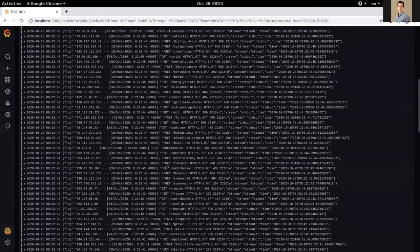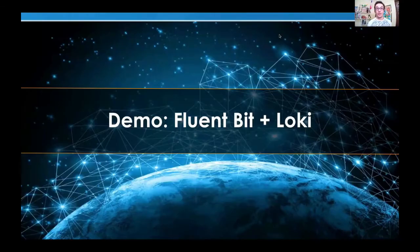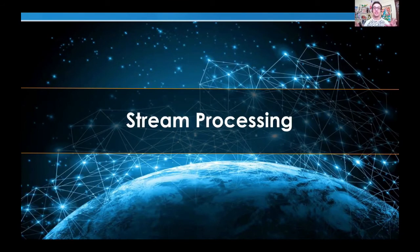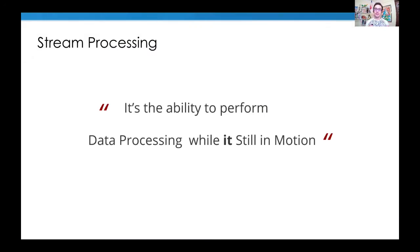Now we'll talk about stream processing and other capabilities. Stream processing is a term you may have heard in contexts like Apache Flink or Kafka. As a concept, it's the ability to process data while it's still in motion. In general use cases, you store data first and then do analysis. But what if, when you get your data, you create a window in memory and process the data before shipping it out? You can do things like distribute data processing or enable edge computing and edge processing.